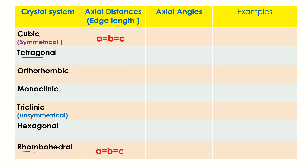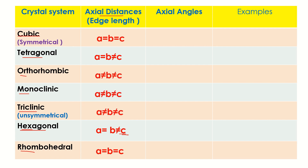The second from the start and second from the last — tetragonal and hexagonal — have only edge length c unequal: a = b, but a ≠ c.